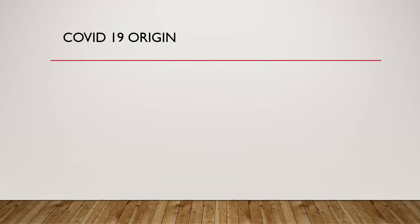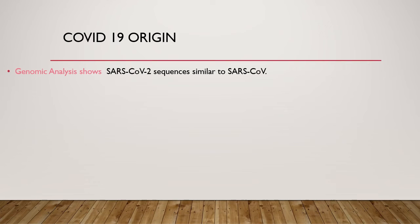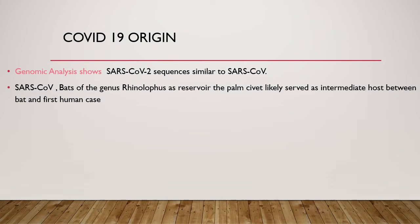Regarding the origin of COVID-19: the virus was rapidly sequenced by Chinese researchers, where a virus sequence of about 30,000 bases containing 15 genes were identified. Comparative genomic analysis showed that COVID-19 virus belongs to the beta coronavirus and is very close to SARS coronavirus, which was responsible for an epidemic of acute pneumonia appearing in November 2002 in China. It was known that bats of the genus Rhinolophus were the reservoir of SARS coronavirus, and the palm civet was estimated to serve as an intermediate host between the bat and the first human cases.